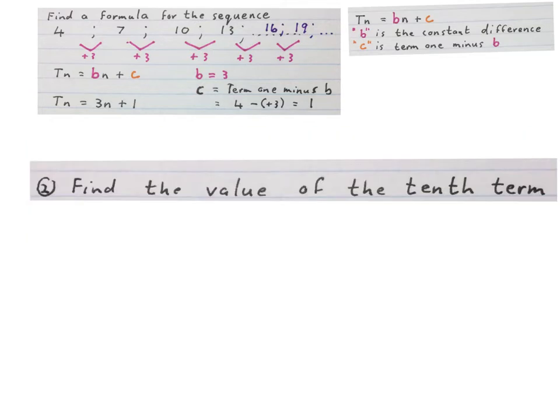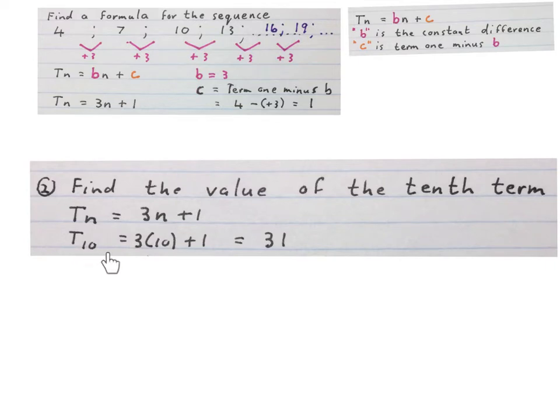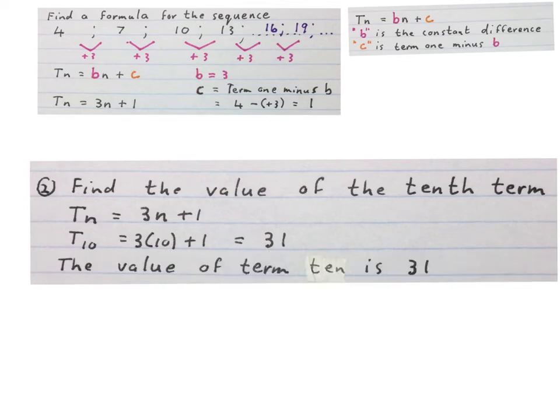Before we do two more examples, they can also on this question ask you find the value of the 10th term. You write down the formula Tn = 3n + 1. Write T10 = 3, replace the n with a 10, plus 1, and your final answer is 31. Then you write the value of term 10 is 31.